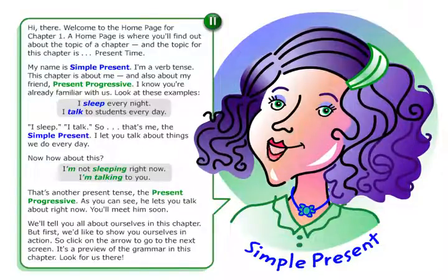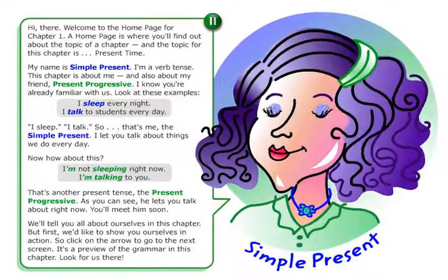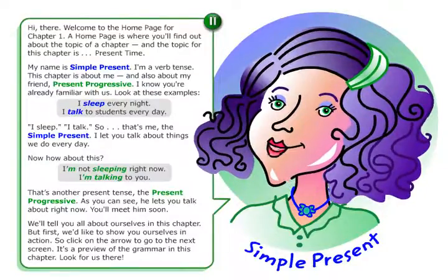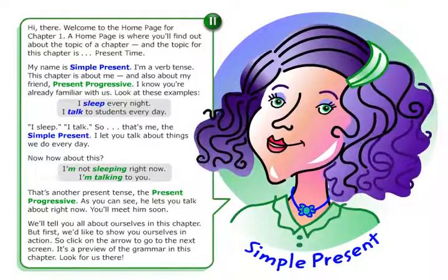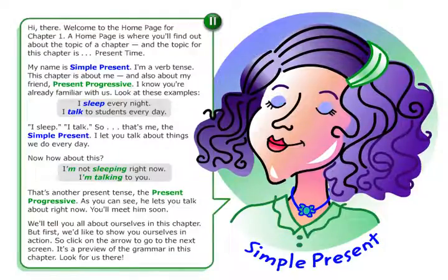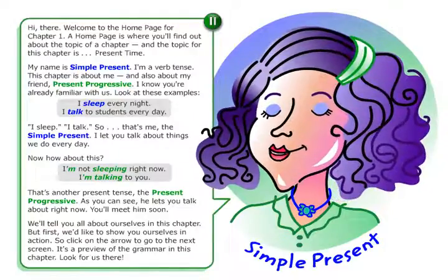Now, how about this? I'm not sleeping right now. I'm talking to you. That's another present tense — the Present Progressive. As you can see, he lets you talk about right now. You'll meet him soon.